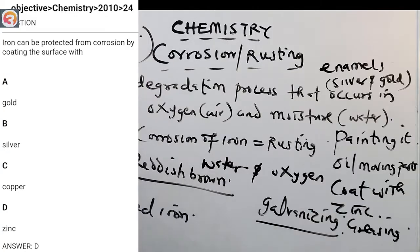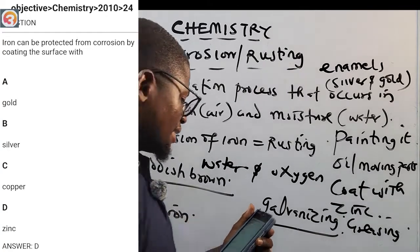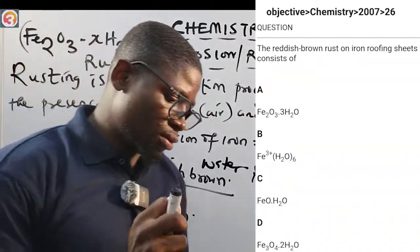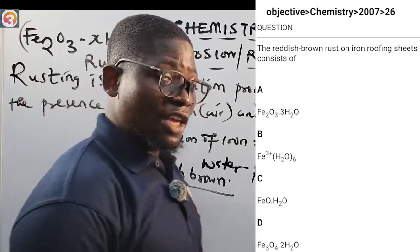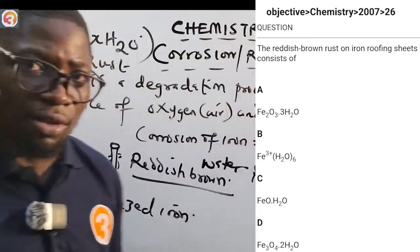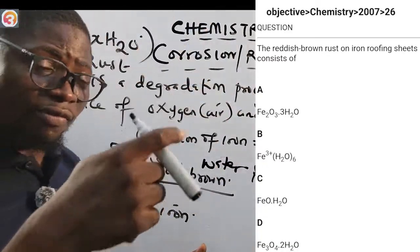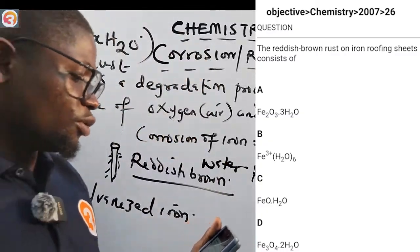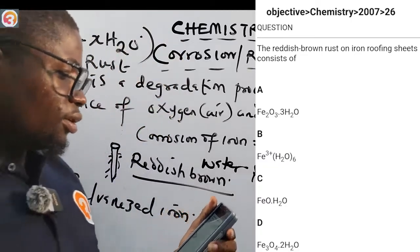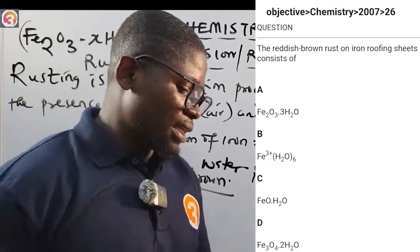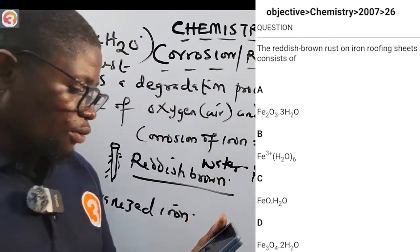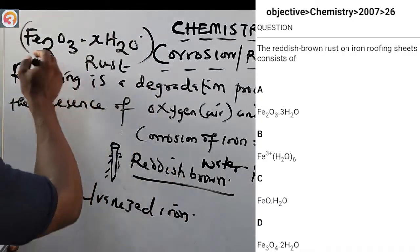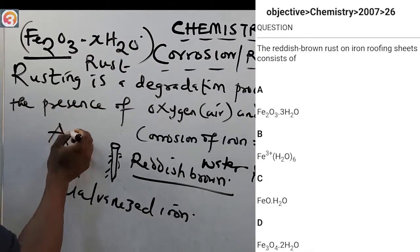The other methods I mentioned — coating with metals like silver and gold — are general corrosion prevention. But for iron specifically, galvanization with zinc is the key method. Now, 2007 question number 26: the reddish-brown rust on iron roofing sheets consists of what? Options include Fe2O3·3H2O, Fe3+·6H2O, FeO·H2O, and Fe3O4·2H2O. Since the formula for rust is Fe2O3, the correct answer is option A: Fe2O3·3H2O.